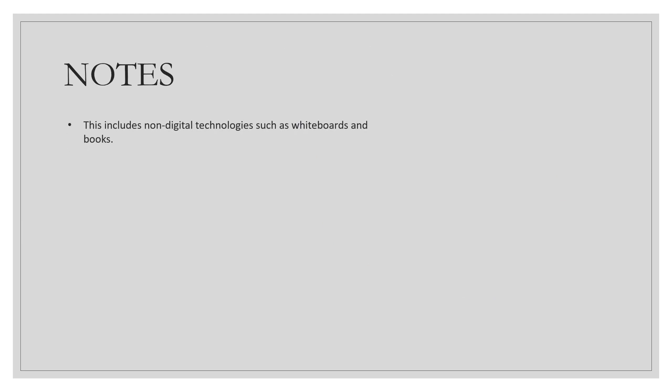Some important notes: when we're talking about technologies, we're also talking about non-digital technologies. Whiteboards and books are examples of non-digital technologies. In TPK we're talking about what constraints those technologies have in instructional delivery. For example, a whiteboard at the front of the classroom means you have to arrange student desks so they're looking towards the front, which automatically means students sitting further behind are more disadvantaged than those sitting in front.